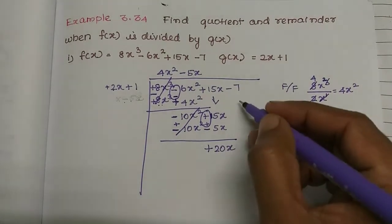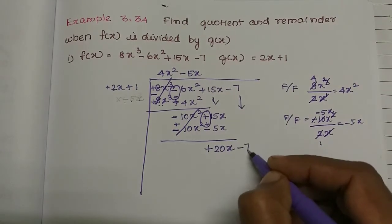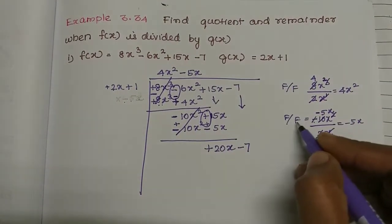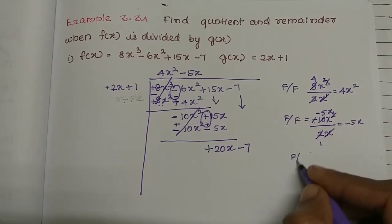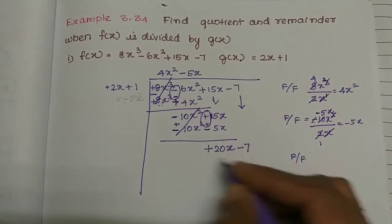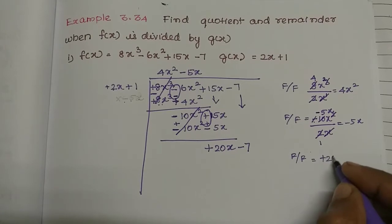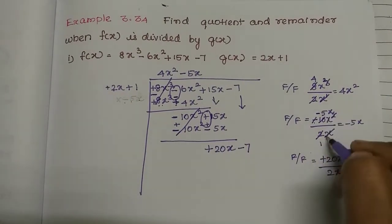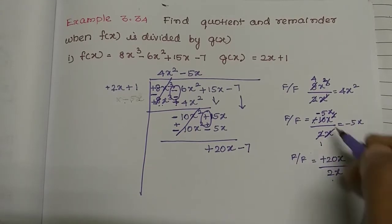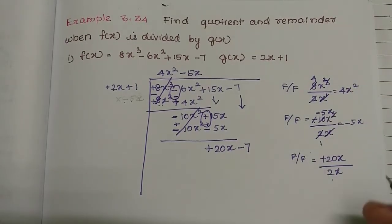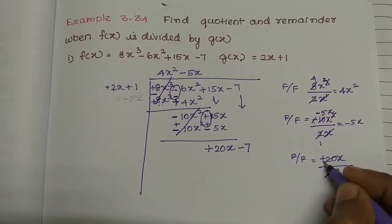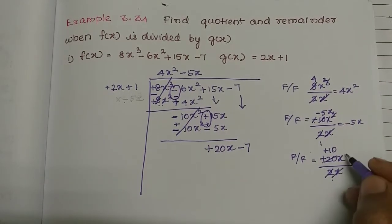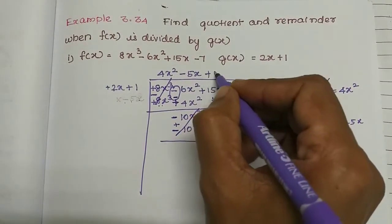Now, first term divided by first term: plus 20x divided by 2x — the denominator's first term is 2x. So 2 tens are 20. The x cancels, and the next quotient term is plus 10.